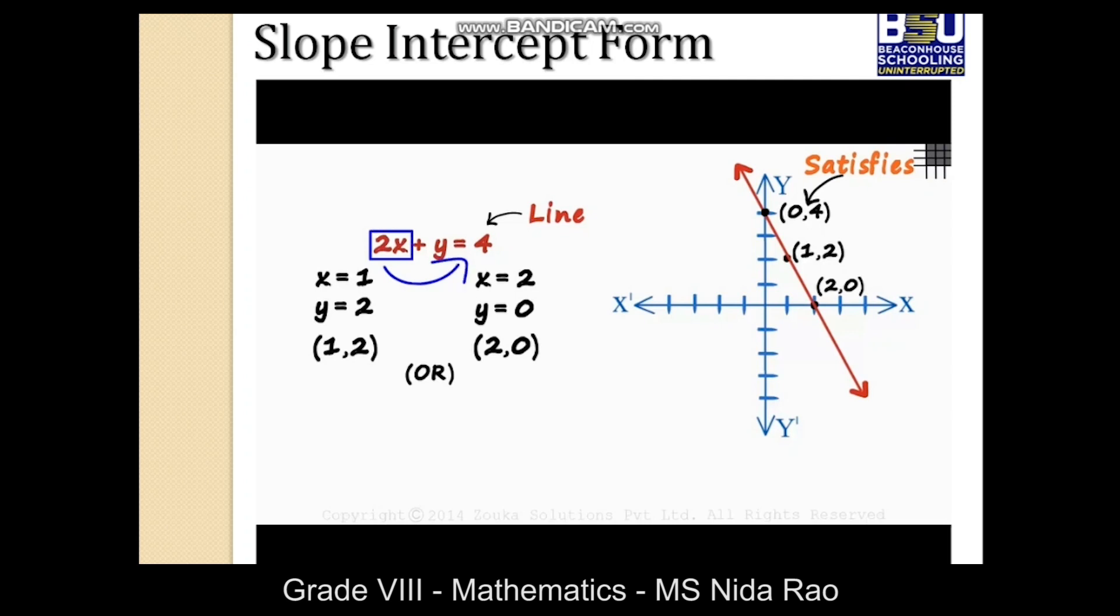There is an interesting way to write this equation. We can transpose 2x to the other side and write it as y equals minus 2x plus 4. Writing the equation this way gives us two important things. First, it gives us the slope. Minus 2 is the slope here. And it gives us the y-intercept of the line. Here, 4 is the y-intercept.